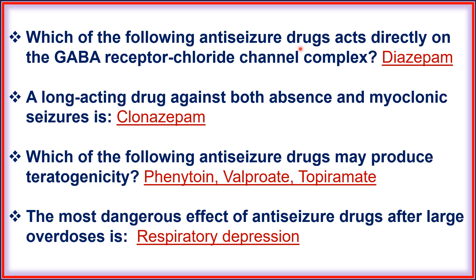The anti-seizure drug that acts directly on the GABA receptor chloride channel complex is diazepam. A long-acting drug effective against both absence and myoclonic seizures is clonazepam. Anti-seizure drugs that may produce teratogenicity include phenytoin, valproate, and topiramate. The most dangerous effect of anti-seizure drugs after large overdoses is respiratory depression.